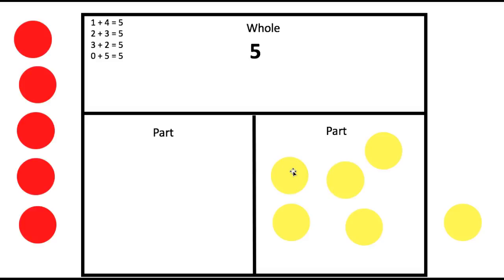So, let's count our yellow counters. One, two, three, four, five. So, we have zero plus five equals five. The whole.